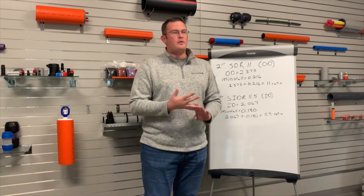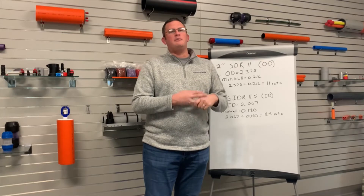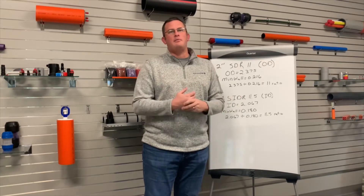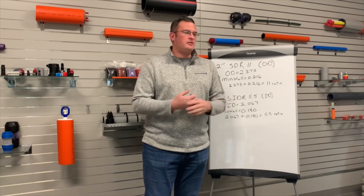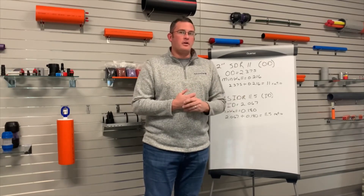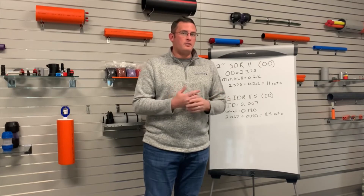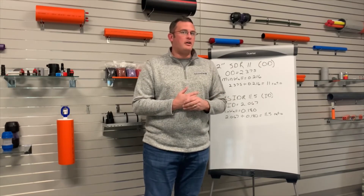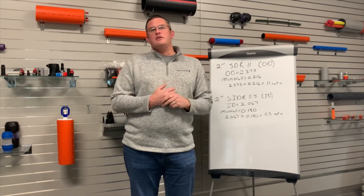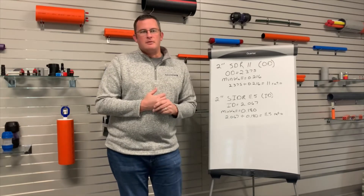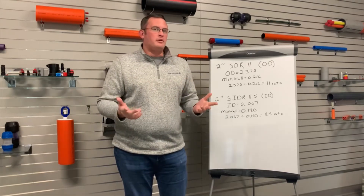Schedule 40 and Schedule 80 are pretty standard wall thicknesses across many different pipe industries. They were originally developed over 100 years ago for steel and iron pipe. Therefore, we've carried over those same dimensions into the HDPE pipe that we produce here.